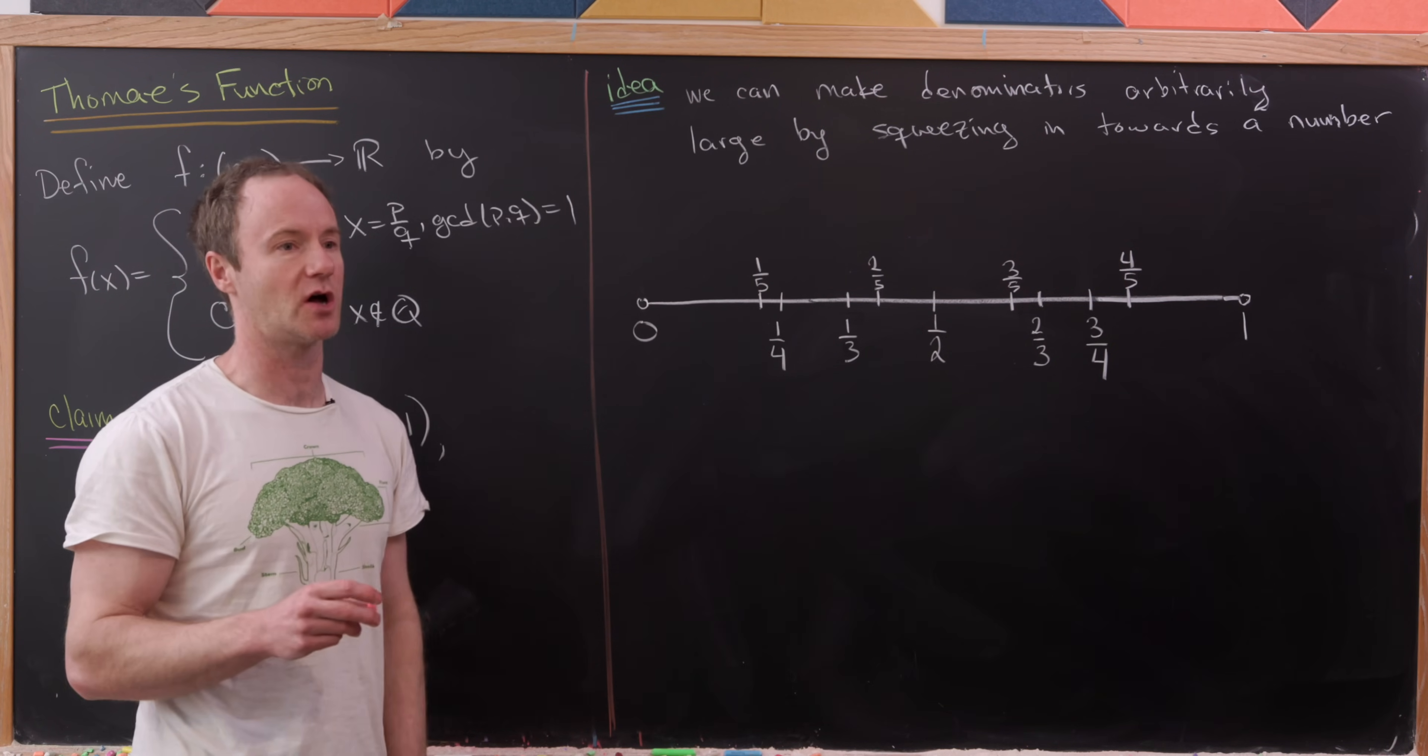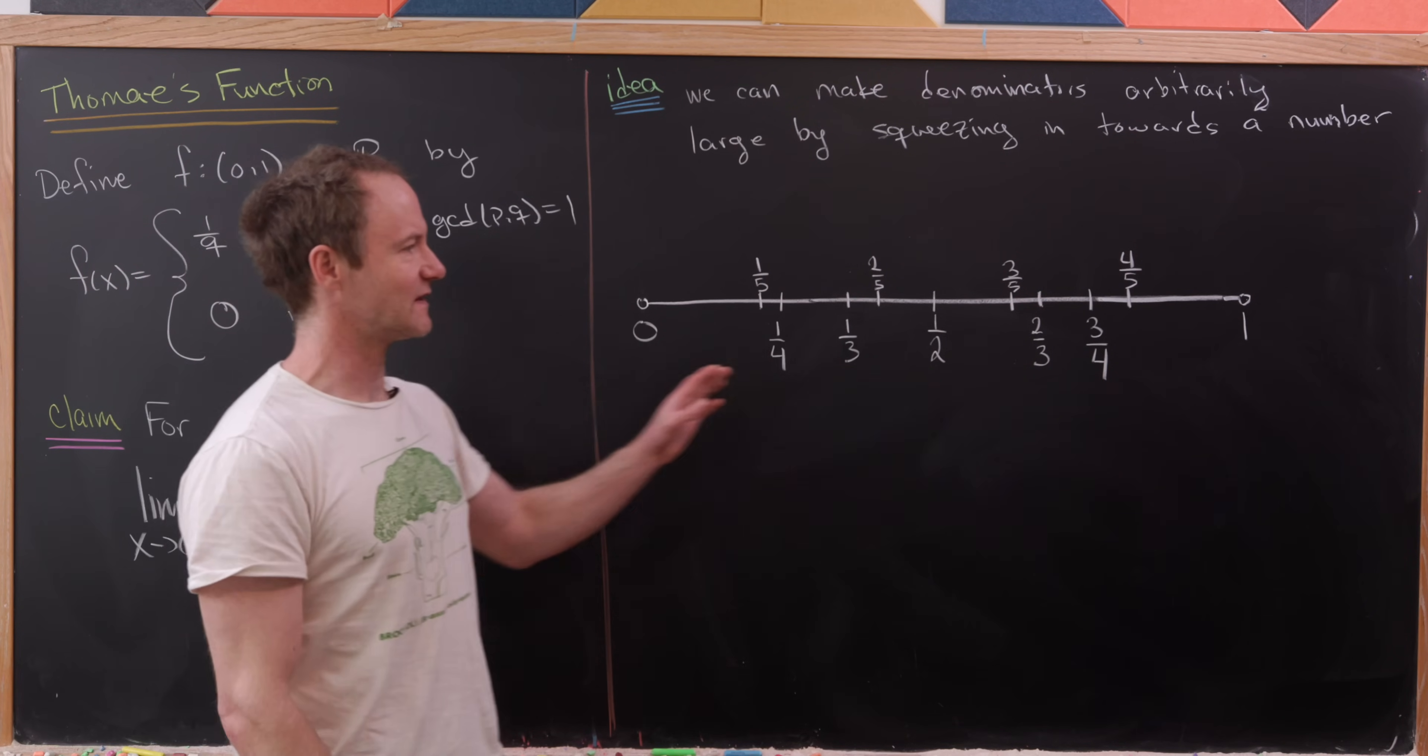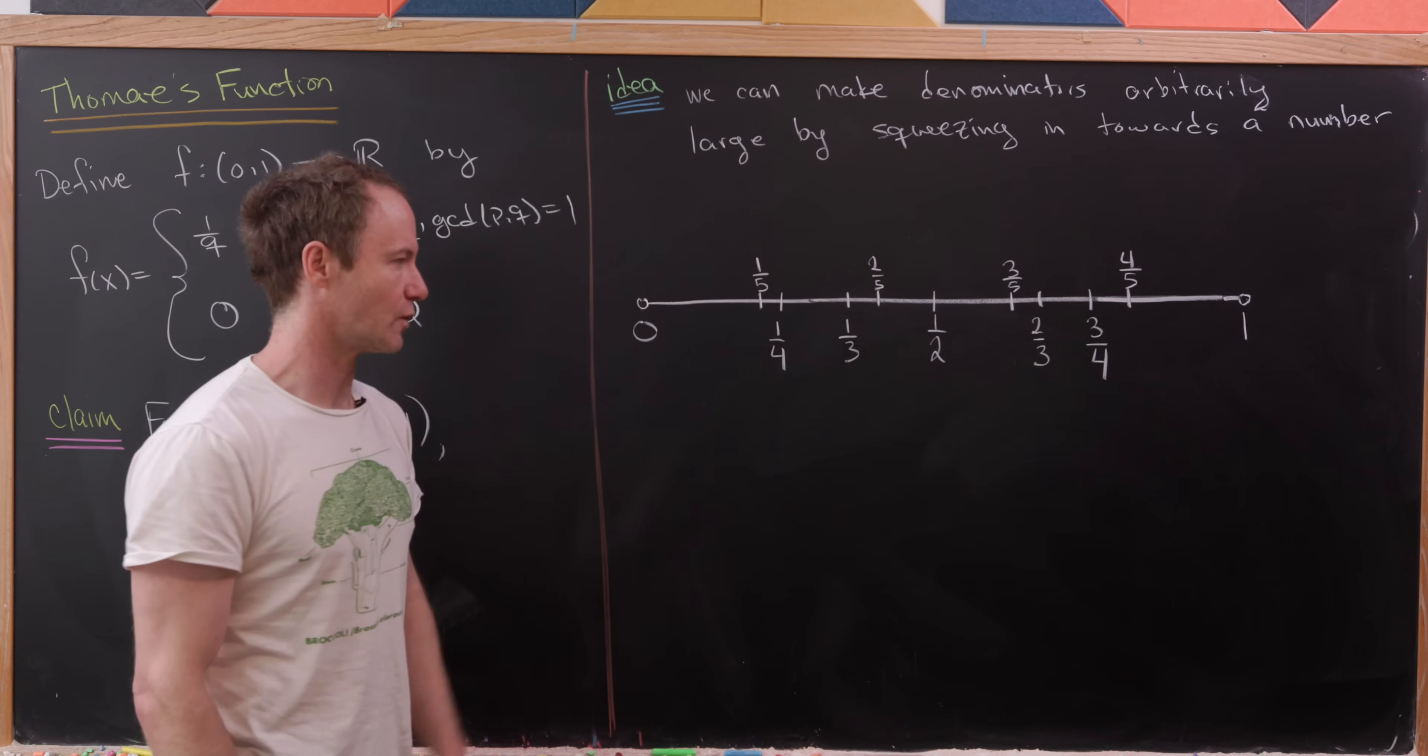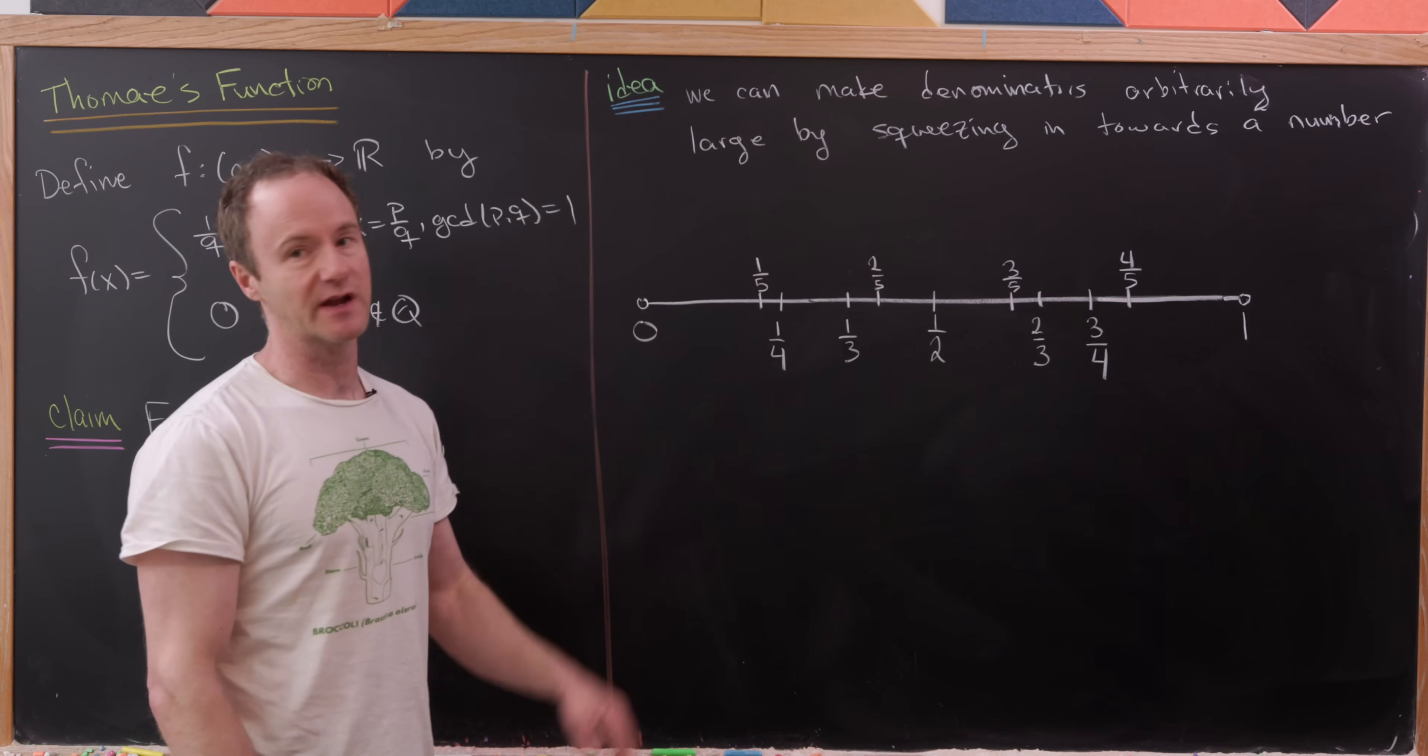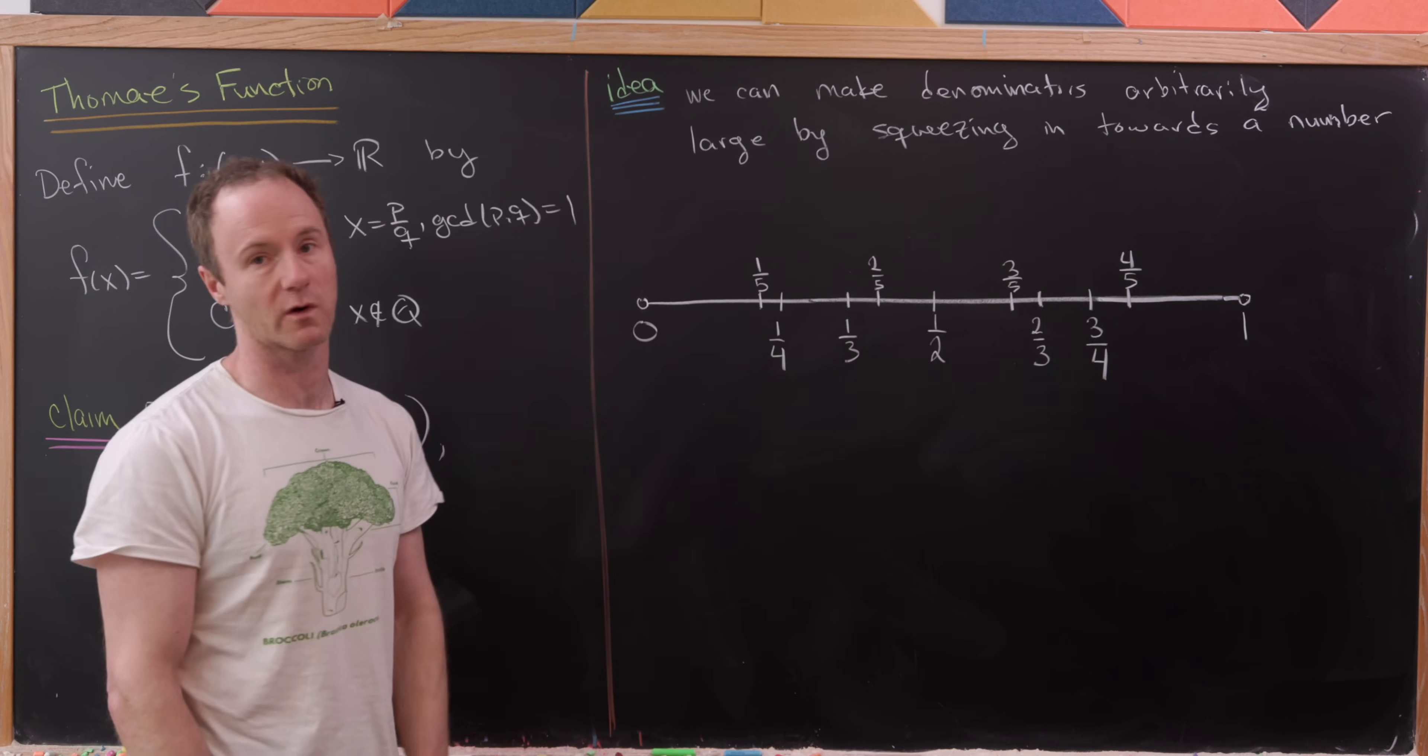And what I really mean is all denominators in a certain open interval. And so here, I've laid out the interval from 0 to 1, and I've put every rational number with denominator of 2, 3, 4, or 5 here.